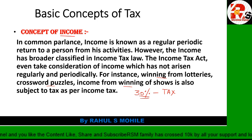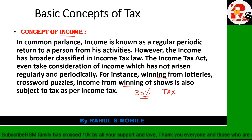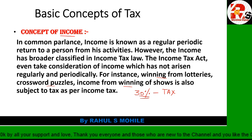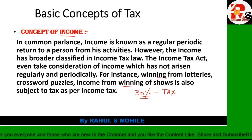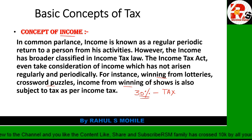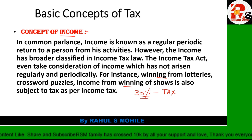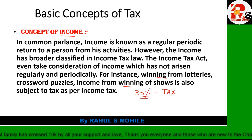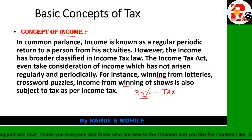For example, you may have seen the show 'Kaun Banega Crorepati' — whatever prize money is won on that show, 30% is directly deducted as tax. So all these points — winning from lottery, winning from horse race — are covered under casual income. To summarize: income earned regularly is income, but income earned irregularly or non-periodically is also covered under the Income Tax Act.